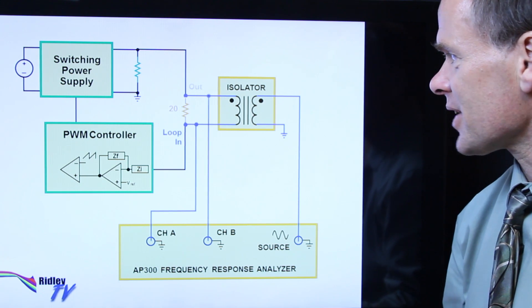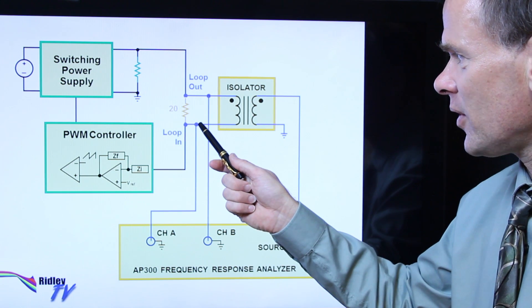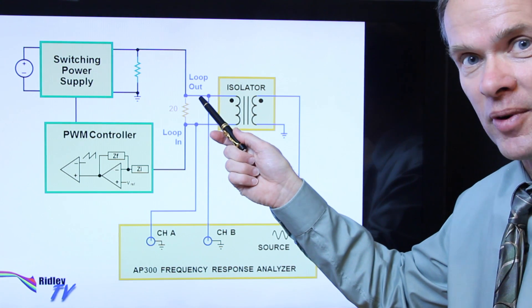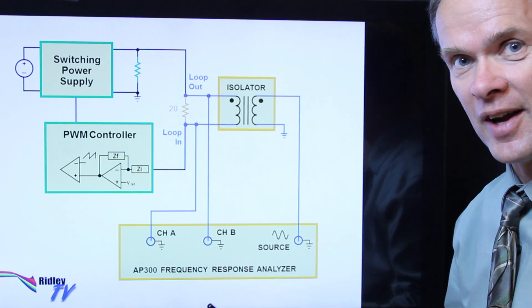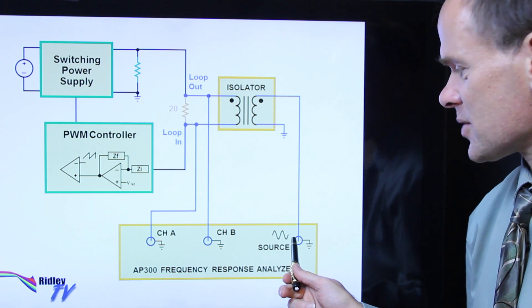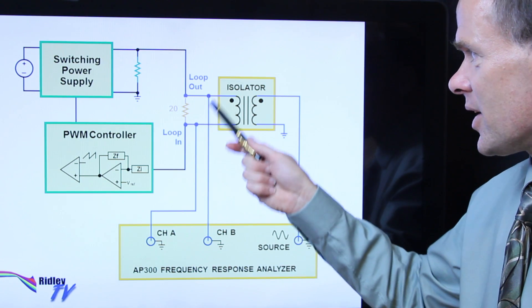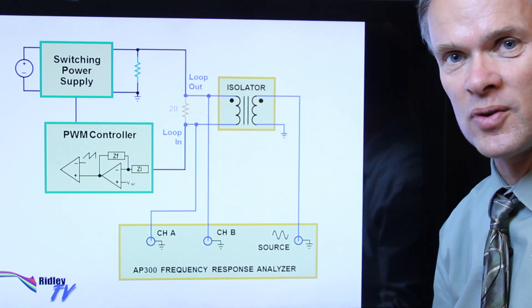Now we put a couple of probes on the circuit. One measures the input voltage to the loop goes in here, and the other one measures the output voltage from the loop that goes over there. And now we're going to start sending a swept signal from the source across the resistor and measure the ratio and gain and phase of those two signals.